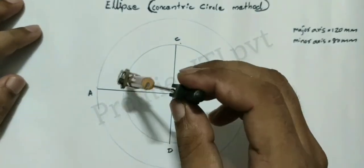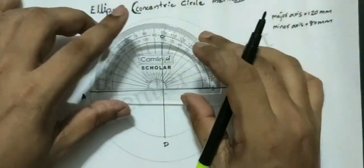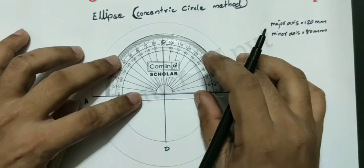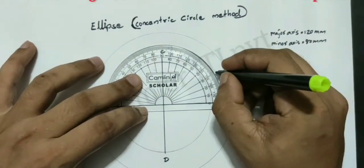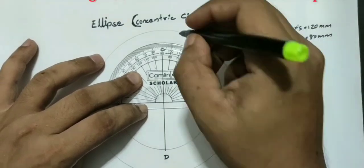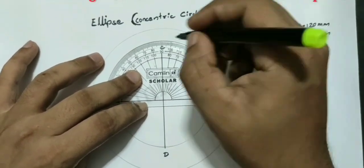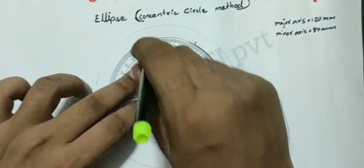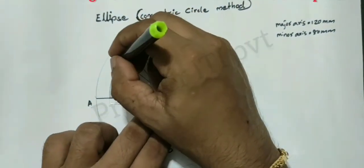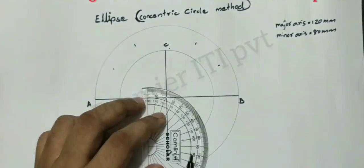The circles are the same as 12 inches. We can make a 30-degree angle using the protractor.